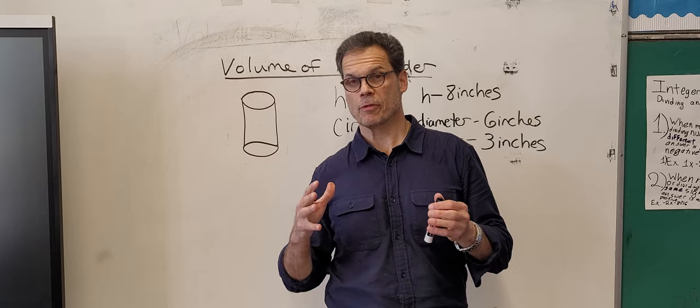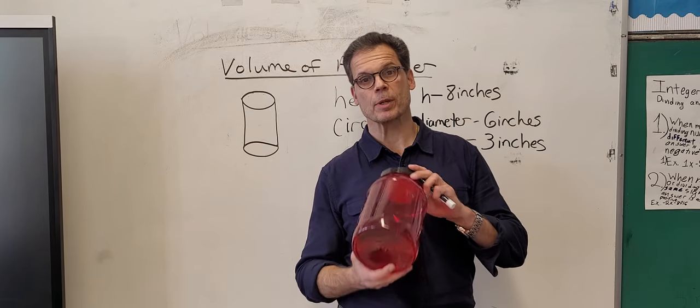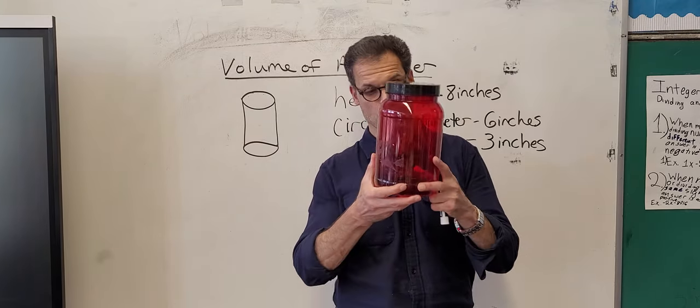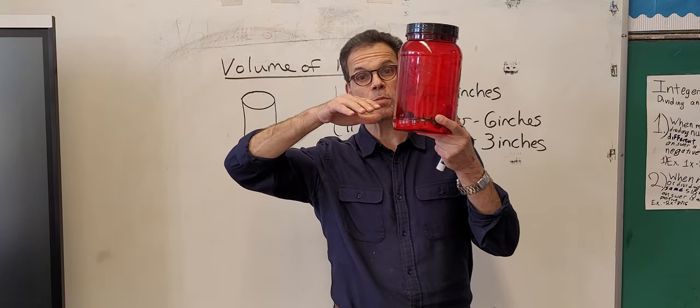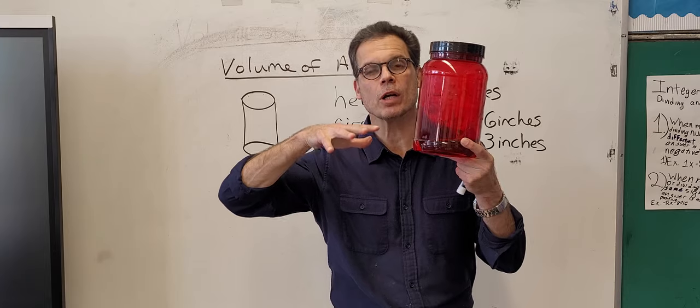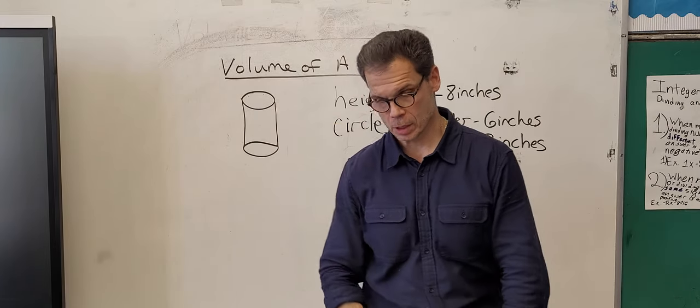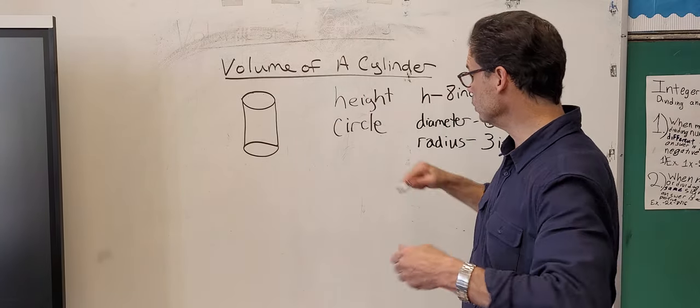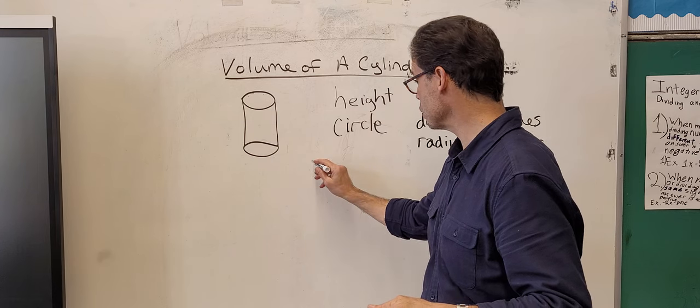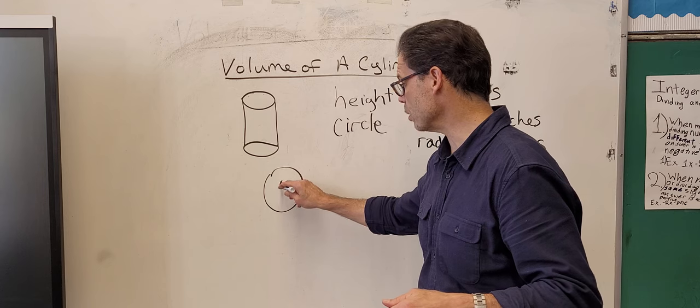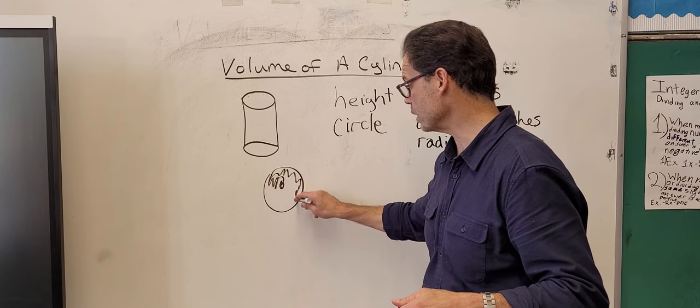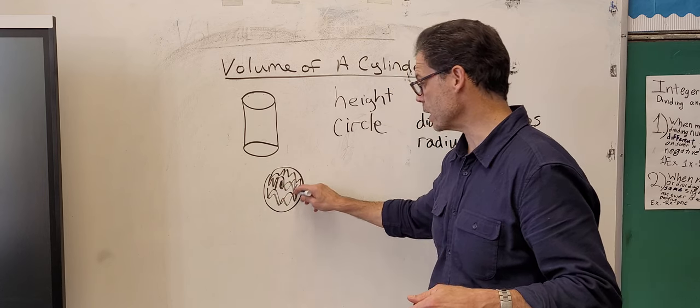Before you learn volume you typically learn area. Area is what you saw the water do. The water went in, hit the bottom, and spread out to cover the circle. If this is a circle, the water hit the middle and started covering the whole circle. That's what area is.